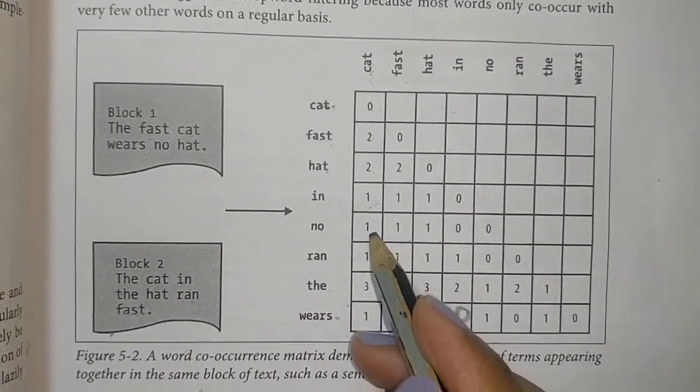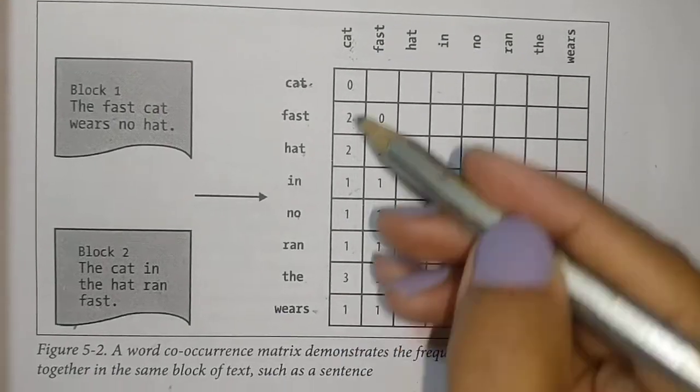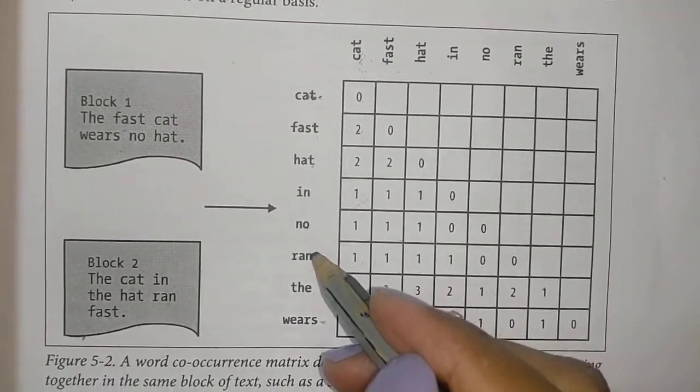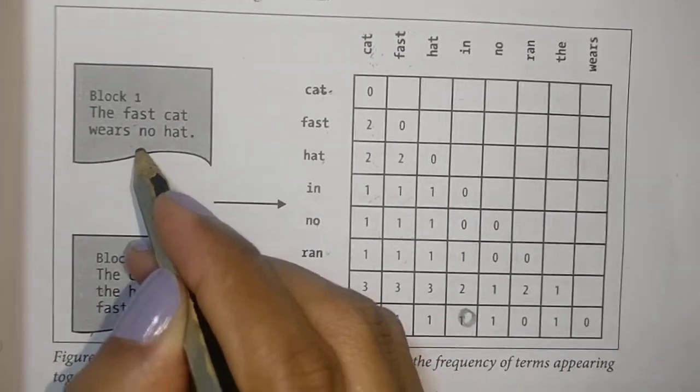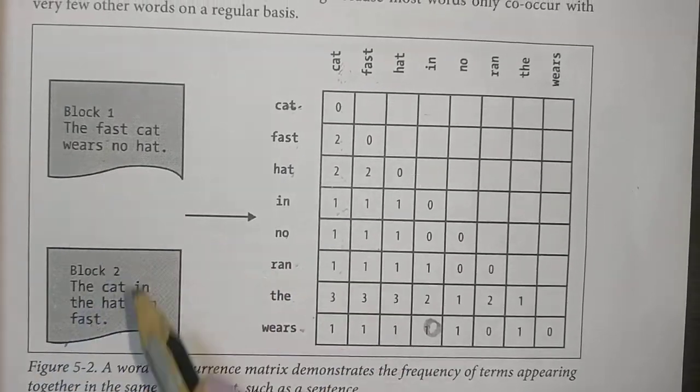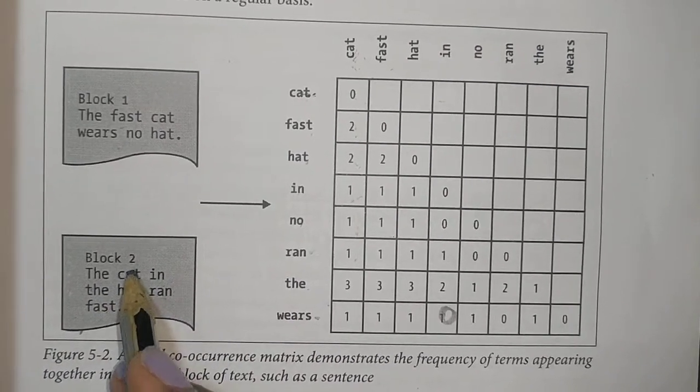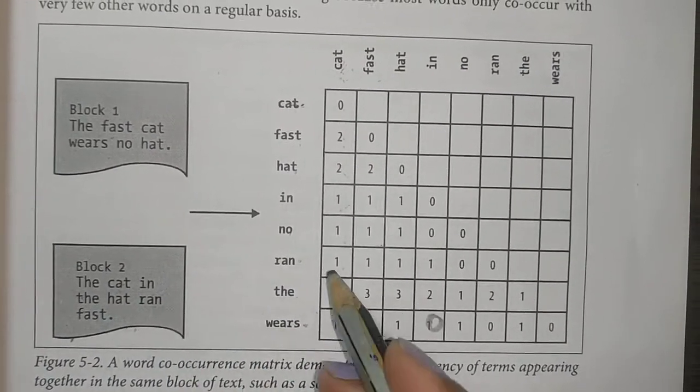Next, cat and ran: the first sentence does not have 'ran'. In the second sentence there is cat and ran once, so we write the value as one.